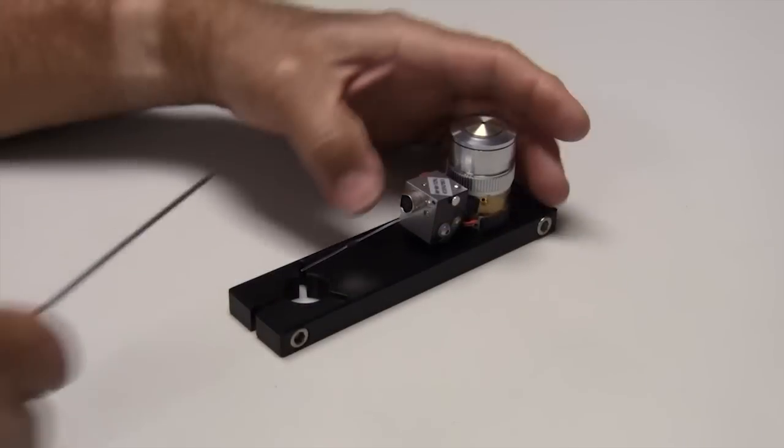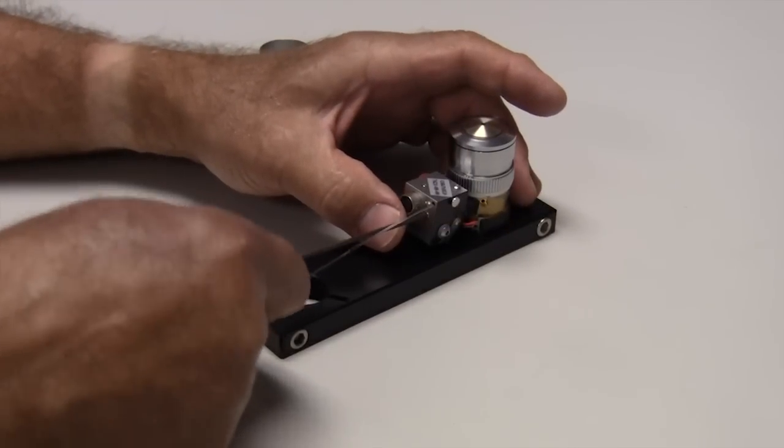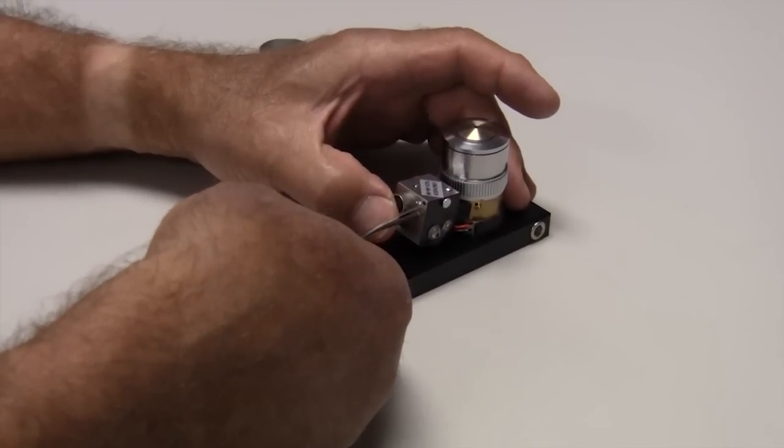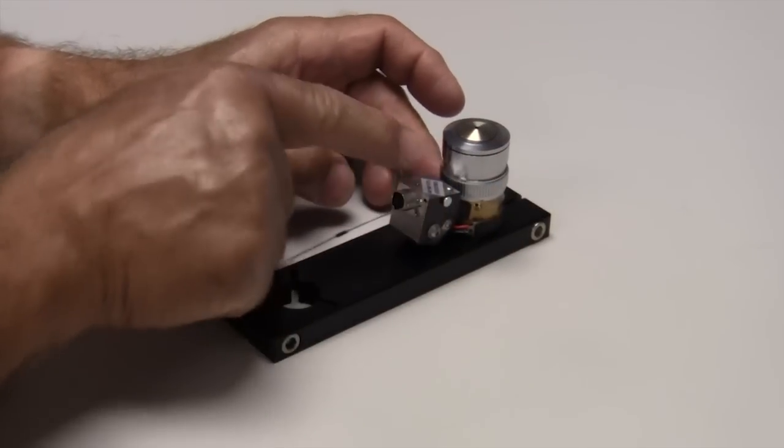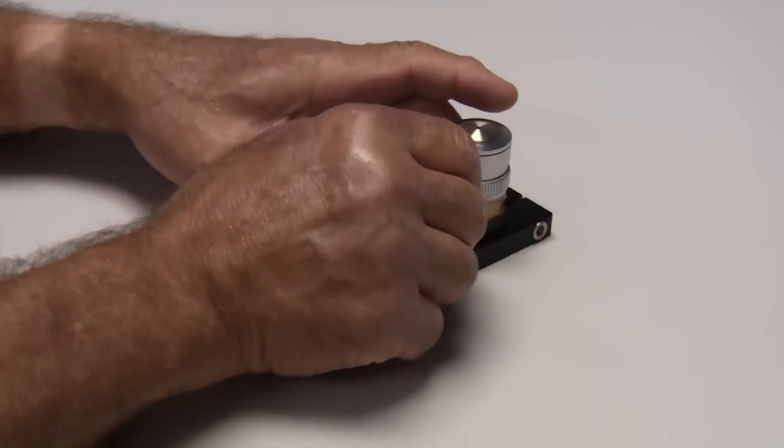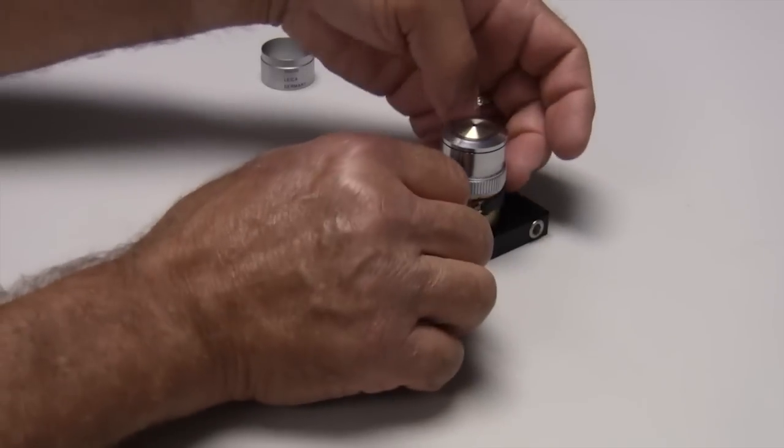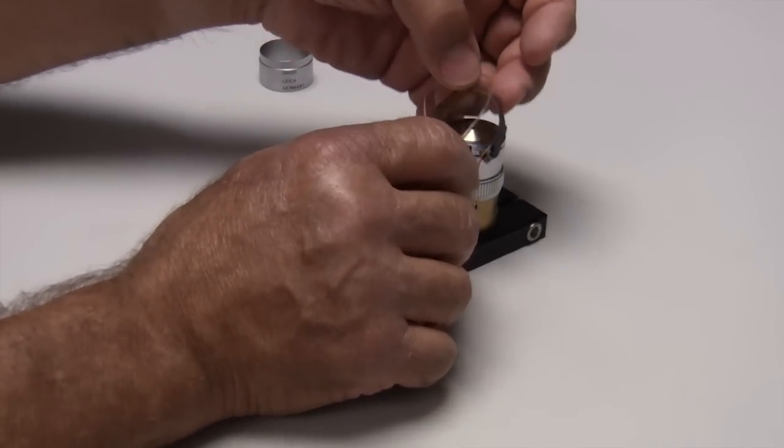To remove the bioptics objective heater, you repeat the procedure in reverse. Simply loosen the screw on the back of the objective heater to loosen the band, press the little button on the side here and pull out a little bit. That expands this little wire, and then lift the whole assembly off of the objective.